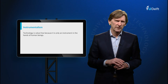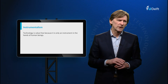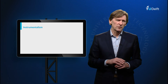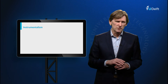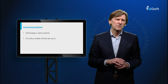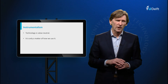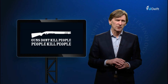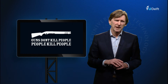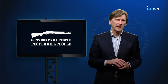Instrumentalism states that technology is value free because it is only an instrument in the hands of human beings. Whether a technology serves or obstructs a certain value only depends on how it is used. A knife can be used to cut bread, but also can be used to kill someone. Instrumentalism is expressed in the slogan of the American Rifle Association: guns don't kill people, people kill people. However, it is much easier to kill someone with a gun than without a gun, and when a burglar breaks into your house you will probably behave differently with a gun at hand than without.